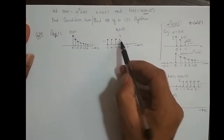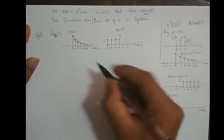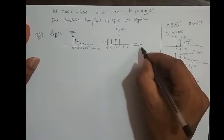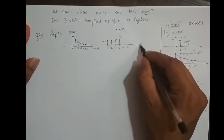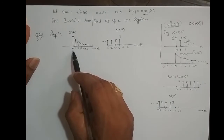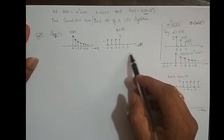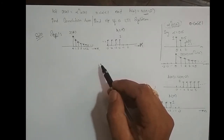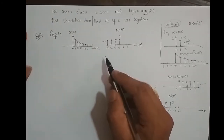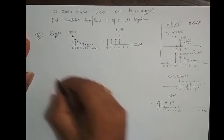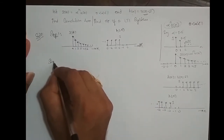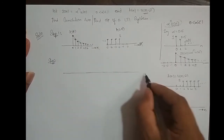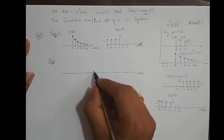Step one was to sketch x(n) and h(-n), which we completed. Next, we replace the independent variable from n to k — so now we have x(k) and h(-k). This is required because of the convolution equation: summation of x(k) · h(n-k). Step 2 is to bring the two sequences onto the same axis k.